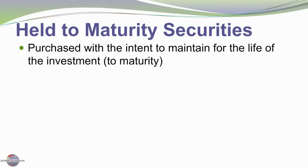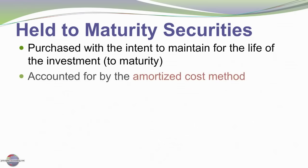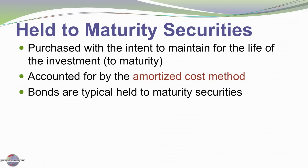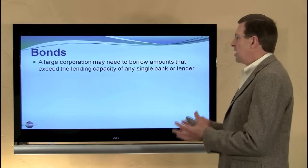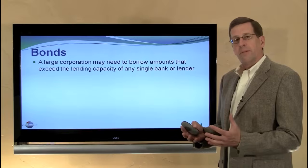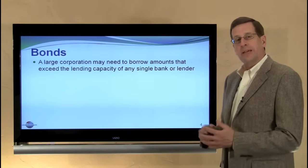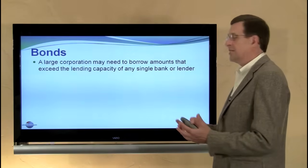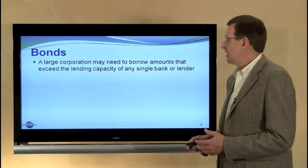Held to Maturity are those investments that were purchased with the intent to maintain them for the life of the investment to a fixed maturity date, typically accounted for by the amortized cost method. Bonds are an example of a typical Held to Maturity security. A bond enables a large corporation to borrow amounts from lenders where maybe a single lender is not large enough or has the capacity to make the loan.